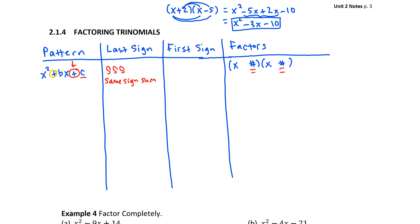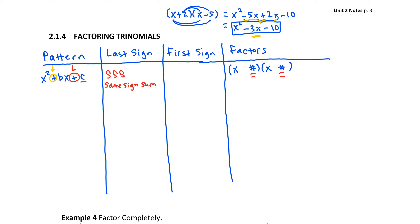Now let's look at the first sign. The middle term bx is the result of combining our outside and inside terms from the FOIL process. When I add two numbers of the same sign and the result is positive, then both original numbers must have been positive. So that first sign makes our choice: both signs in our binomial factors are going to be positive. The sign pattern in my binomial factors is x plus a number times x plus a number. The pattern will sink in as we practice.